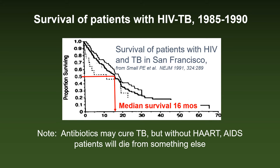This patient illustrates a sad reality in those days. One might have success with treatment of one infection — here it was TB — but the patient succumbed a few months later to another. In San Francisco during the late 1980s, the median survival of co-infected patients — HIV-TB — was only 16 months.